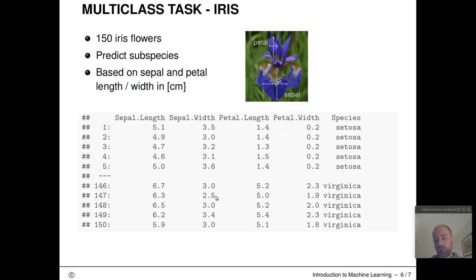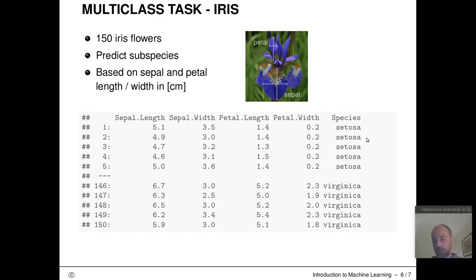What Fisher wanted to study was whether it's possible to make measurements on the flower — specifically the petal and sepal components, measuring their respective width and height — and use those to identify the subspecies. He collected data for exactly 150 iris flowers along with their subspecies labels (Setosa, Virginica, or Versicolor), then studied whether he could automatically predict the subspecies based on these four measurements.